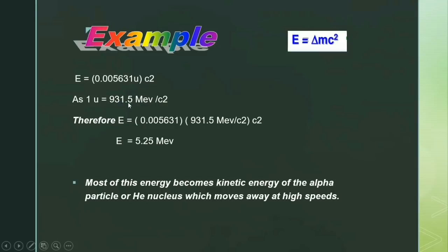Using E = Δmc², and knowing that one atomic mass unit equals 931.5 MeV/c², the energy is: E = 0.005631 × 931.5 MeV/c² × c² = 5.25 million electron volts. Most of this energy becomes kinetic energy of the alpha particle, or helium nucleus, which moves away at high speeds.